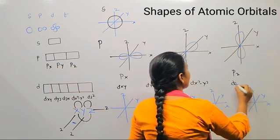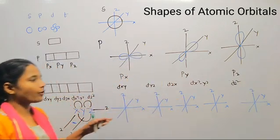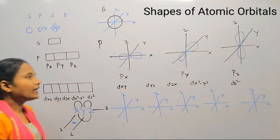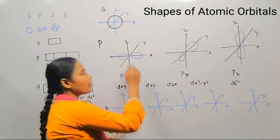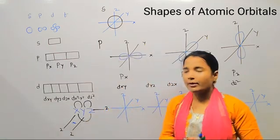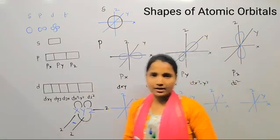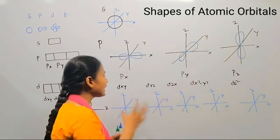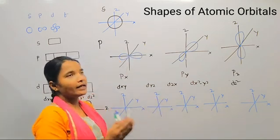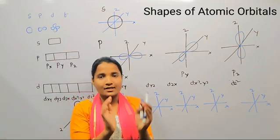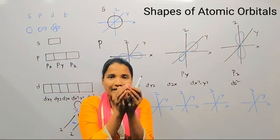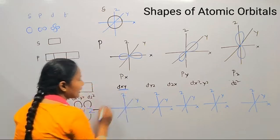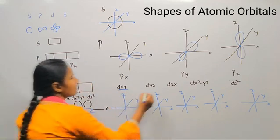Draw the three coordinate axes and note the difference: for p orbitals, the orbital lies along the axis. But for d orbitals, the orbital lies in between the axes — between xy, yz, and zx.